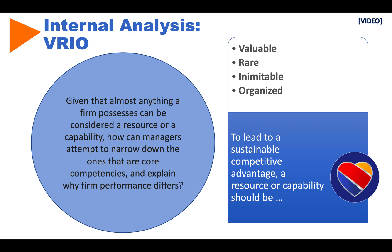This is what's called the VRIO analysis, and it helps us look at all of the resources and capabilities we have and determine which ones actually bring us core competencies. A core competency is something that we do or have that beats the competition — we do it better, or this resource is more valuable because our competitors don't have it — enabling stronger levels of firm performance.